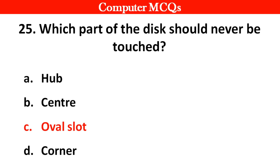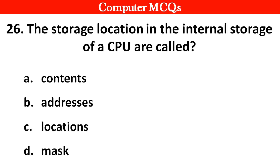The storage locations in the internal storage of a CPU are called: option A contents, B address, C locations, D mask. Right answer is option B, address.